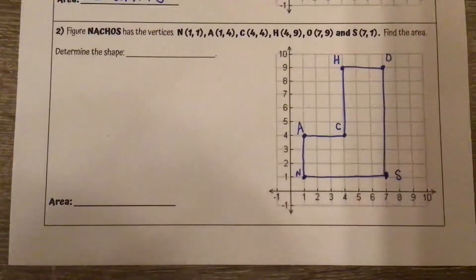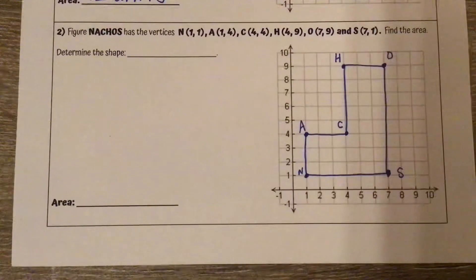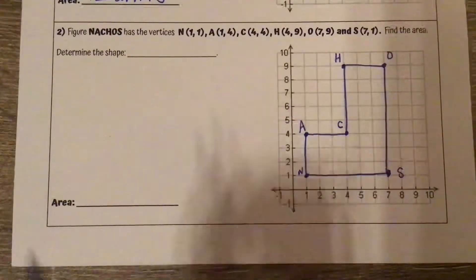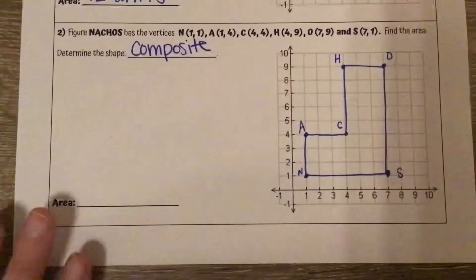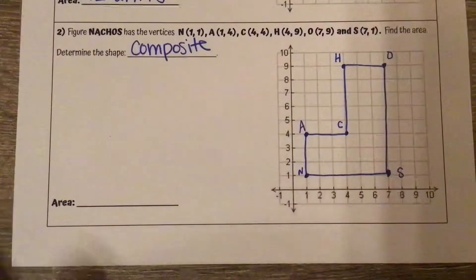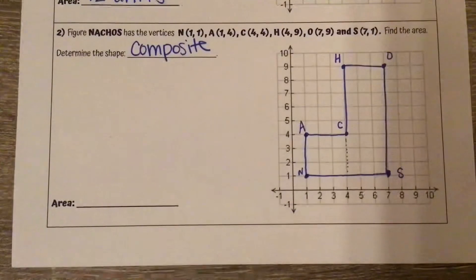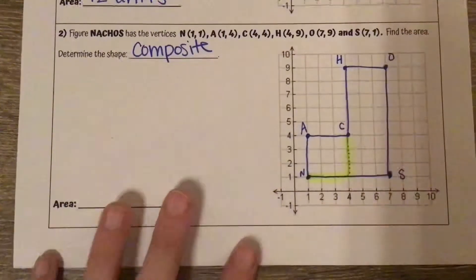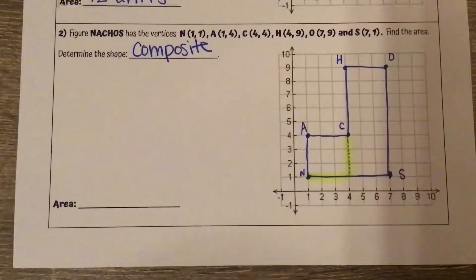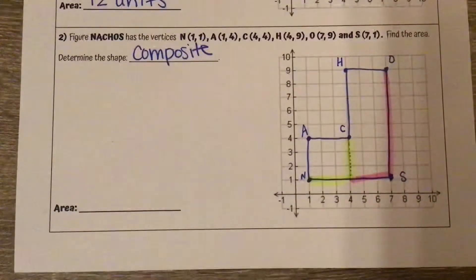Looking at this shape, it has one, two, three, four, five, six sides. We were only finding the areas of three and four-sided shapes, so this is a composite shape that we're going to need to break down. You can break this down multiple ways. I am going to cut mine here, determining the base and height of the first rectangle as well as the base and height of the second rectangle.